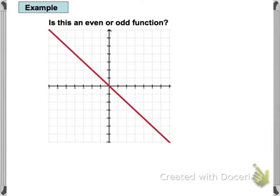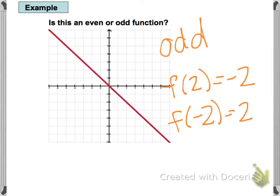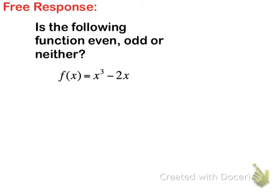Here's the last graph — even or odd? Hopefully you decided this one is odd. For example, when x is 2 we get negative 2, and when x is negative 2 we get positive 2, so they're opposites — that makes it odd. If you don't have either symmetry, the answer could be neither. Here's your free response question: is this function even, odd, or neither? And that's where we'll end our video. Thank you.